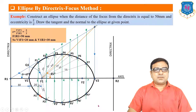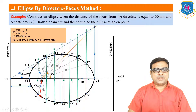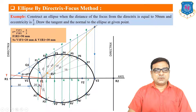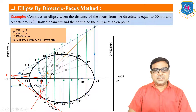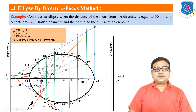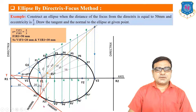For the normal and tangent, select any point on the curve and join it to the focus F1. From F1, draw a line perpendicular to this line; it will intersect the directrix. From that intersection point T, draw a line passing through the selected point on the curve — this is the tangent. A line perpendicular to the tangent from that point is the normal. This completes the directrix and focus method for the ellipse.